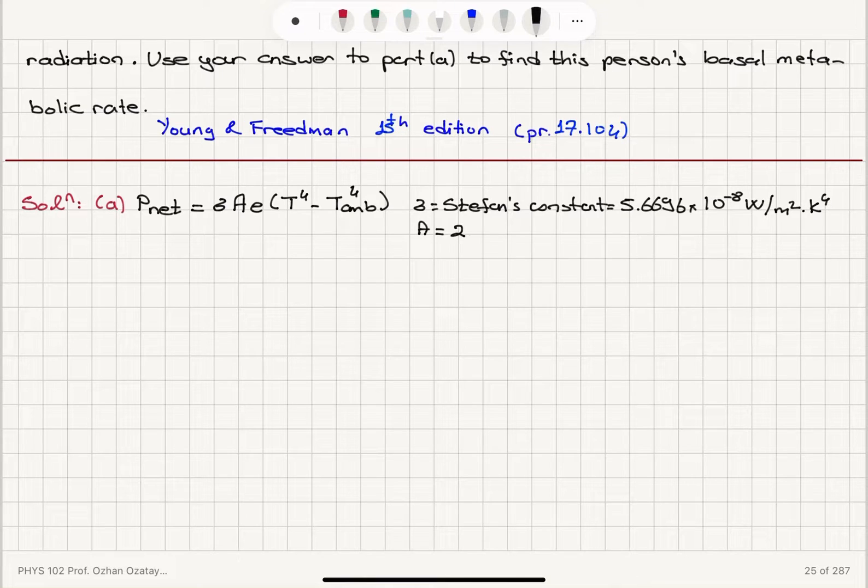So the surface area of this person is approximately 2.0 meters squared. Emissivity is given as 1. It's like a black body.